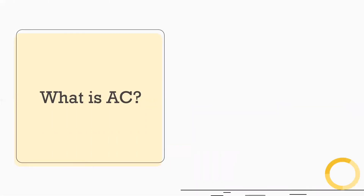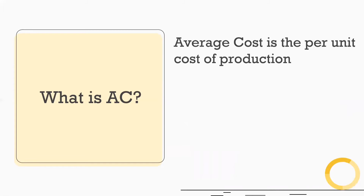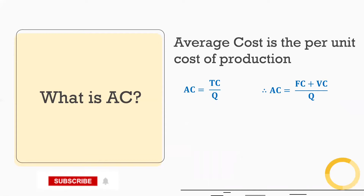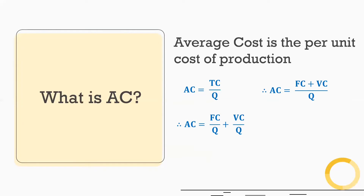Let's begin with the idea of average cost. Average cost is the per unit cost of production. Therefore, average cost is equal to total cost divided by quantity produced. We know that total cost is equal to fixed cost plus variable cost. So therefore, average cost is equal to fixed cost divided by quantity, plus variable cost divided by quantity.